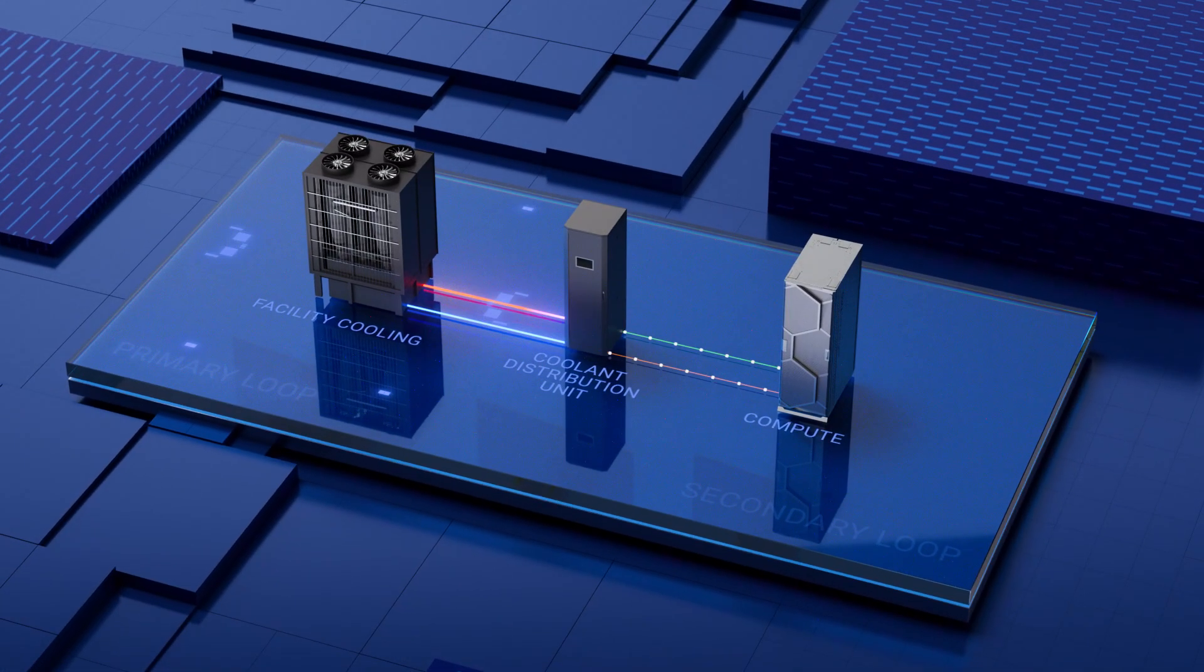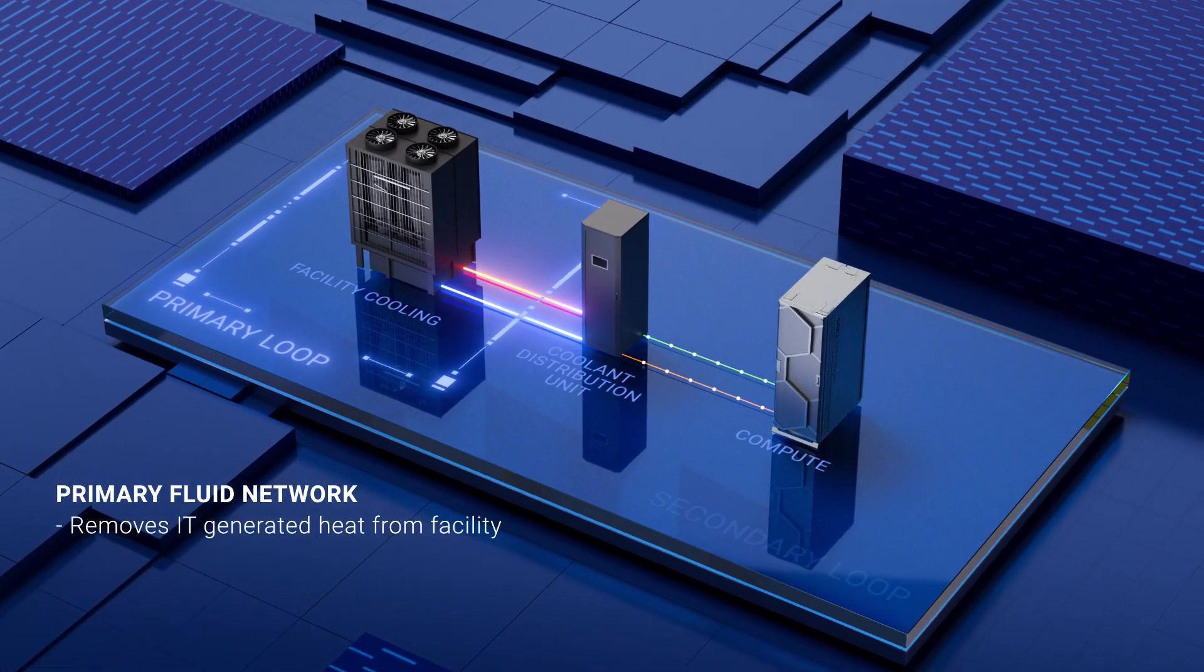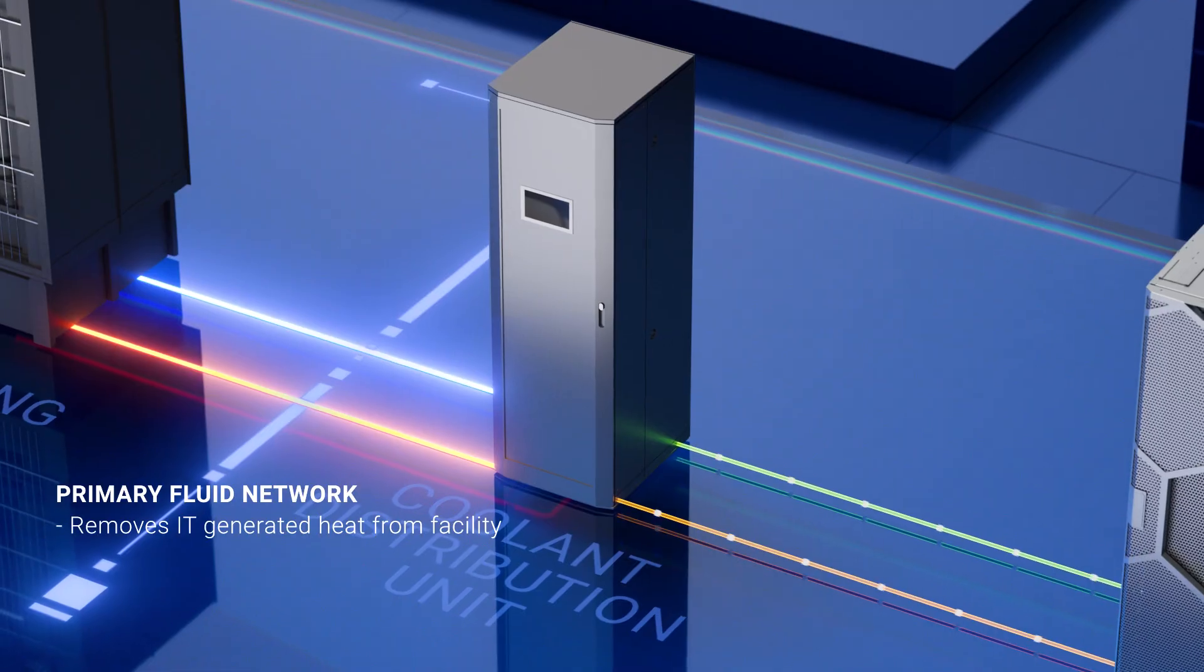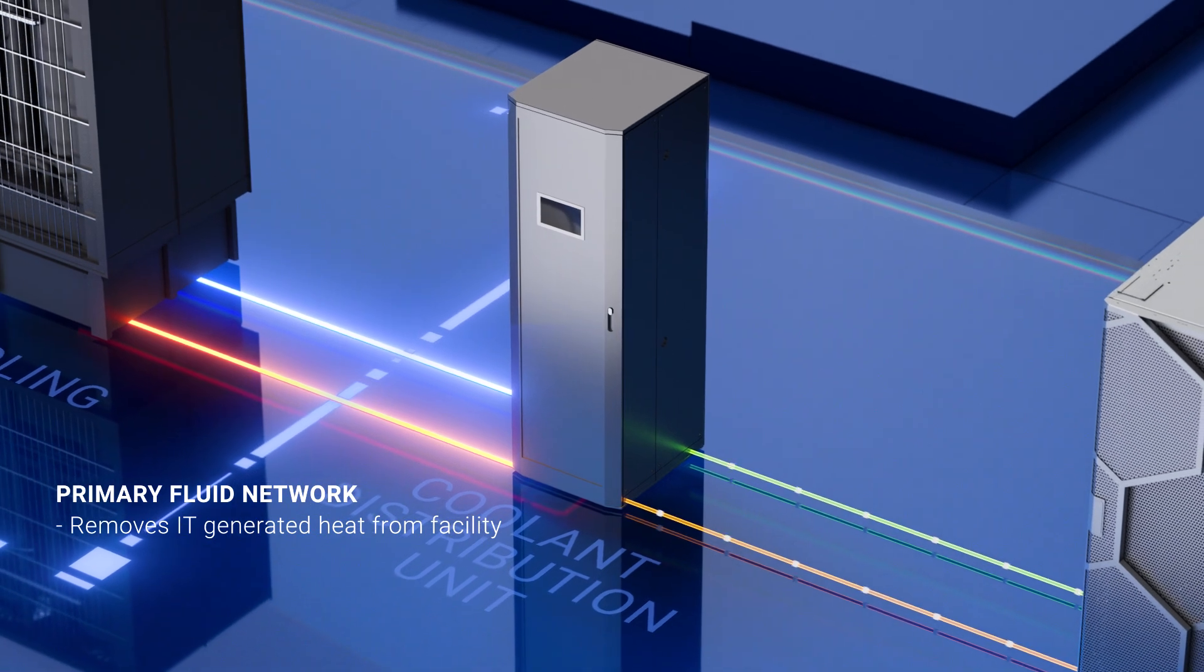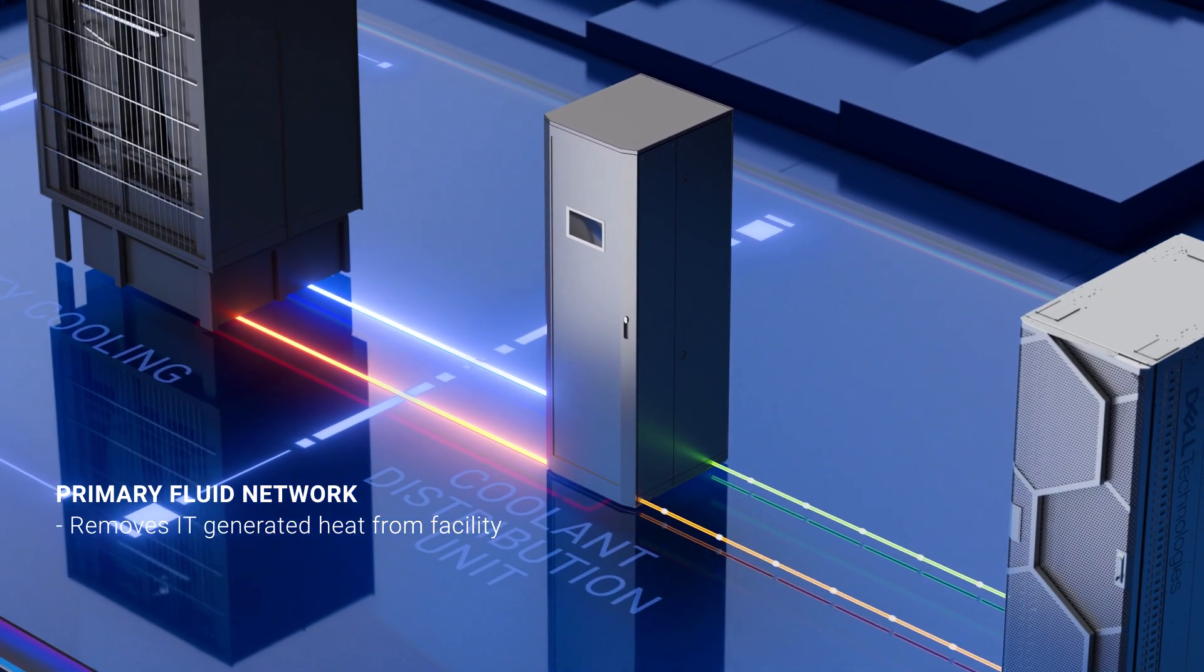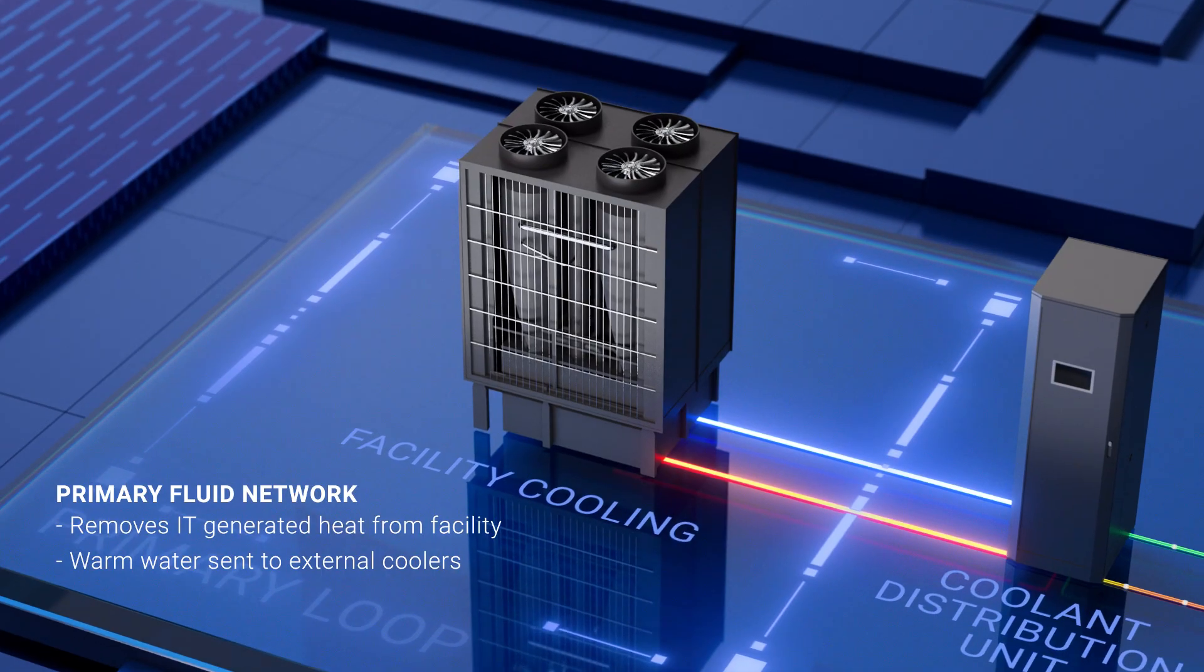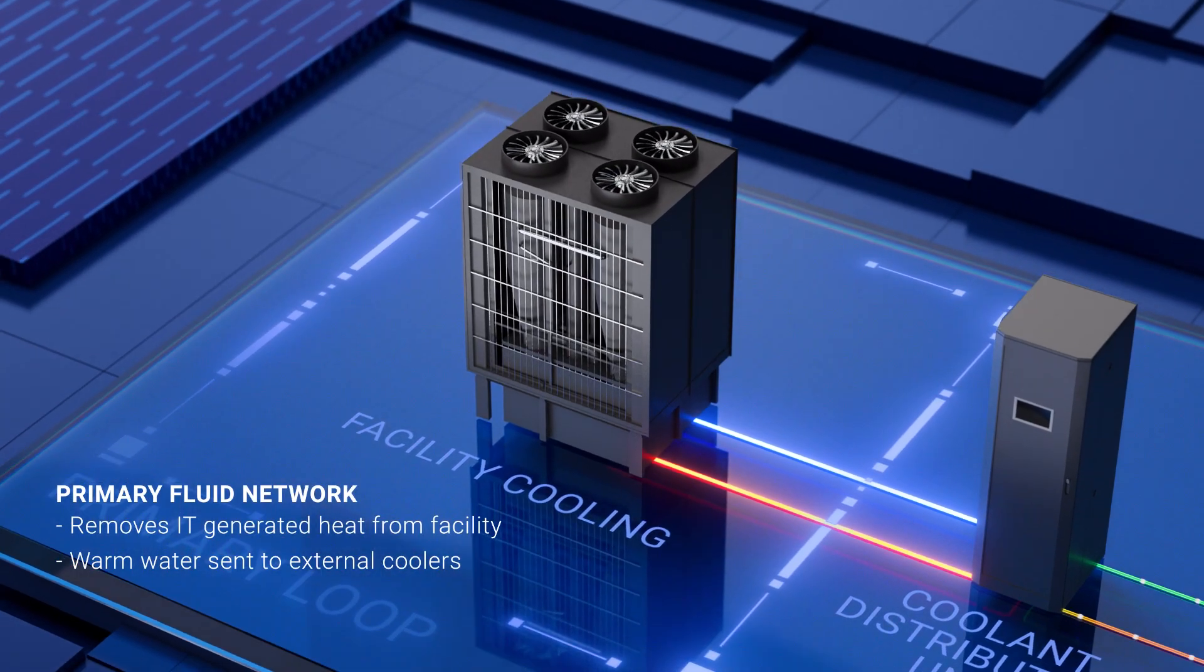The Primary Fluid Network or Facility Water System, FWS, removes IT-generated heat from the facility. Cool supply water enters the CDU and the CDU returns warm water after exchanging heat with the secondary fluid network. The warm water is then sent to external cooling systems, including chillers or cooling towers, cooled and recirculated.